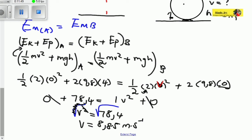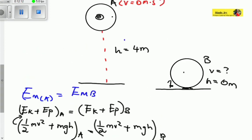Are we done? No, we are not done. Remember that velocity is not a scalar quantity but a vector quantity. We have to describe the magnitude and the direction. This ball is moving downwards — proof: the height ended at 0 and initially was 4, meaning the height reduced, therefore it moved downwards. This is what you do when calculating velocity using the law of conservation of mechanical energy. Thank you for watching. Do recommend your friends to stay tuned.